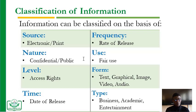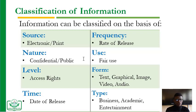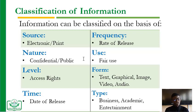The next classification is the level — looking at access rights. This means: is the person authorized, do they have access, or do they have the right password? For example, you have your own institutional email account, and the access right is the password used to authenticate you in the system. The level of rights you have determines what you can access. The next point is time — the date of release is also key in classifying information.